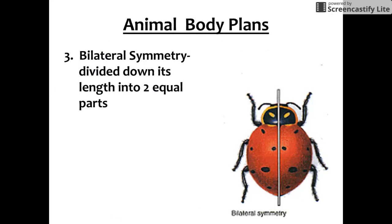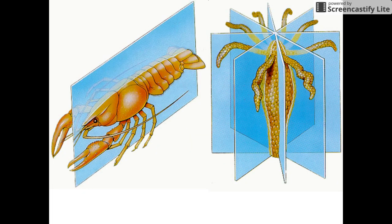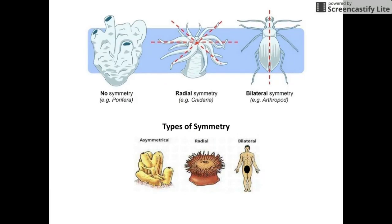Lastly, there's bilateral symmetry. The prefix 'bi' means two, so we can only divide that animal down one plane into two equal parts, and those two parts form a distinct right and left side that are mirror images of one another. For example, the crayfish is bilateral — its plane goes right down the middle and you can see its right and left side distinctly. The hydra, by contrast, has radial symmetry, with tentacles radiating out from a central tube. Arthropods and humans also have bilateral symmetry. Notice the sponge appears as our example of asymmetry in the animal kingdom.